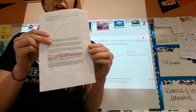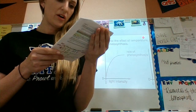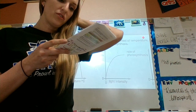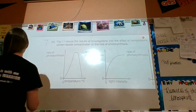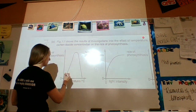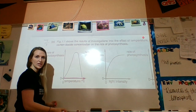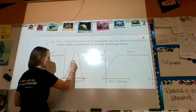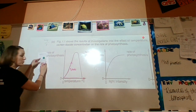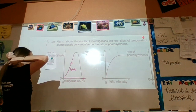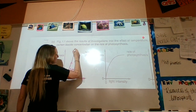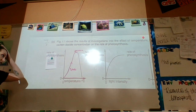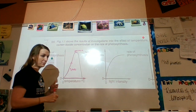Temperature affects the rate of enzyme-controlled reactions. In general, as temperature increases, the rate of photosynthesis increases — we see this in the graph. Temperature will cause photosynthesis to increase until an optimum, and then above this, if temperature continues to increase, photosynthesis is going to decline and completely stop.